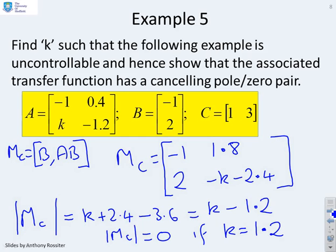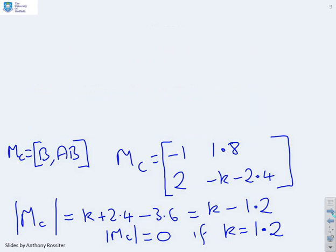So that's the first step. It said find K such that the following example is uncontrollable. It's uncontrollable if the controllability matrix is rank deficient. And because it's square here, that's equivalent to the determinant being 0. And the determinant is 0 if K is 1.2. So that's step one. The next bit was show that the associated transfer function has a cancelling pole zero pair. So now what we need to do is find the associated transfer function. So let's do that.